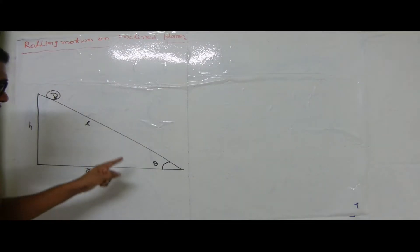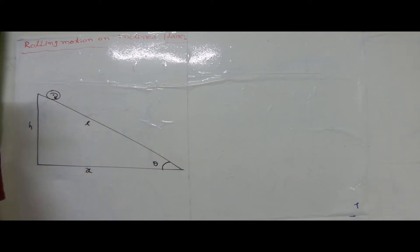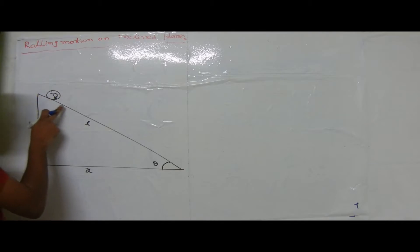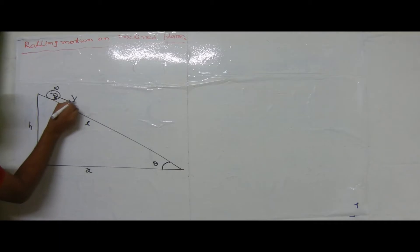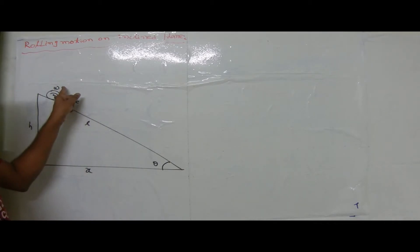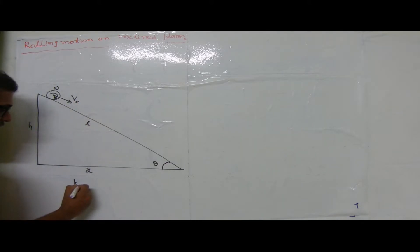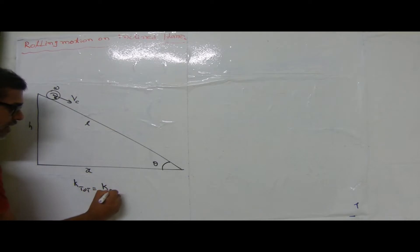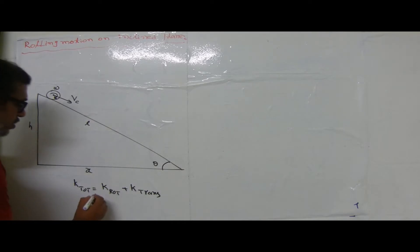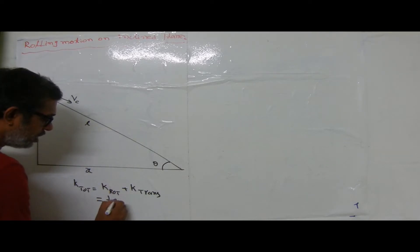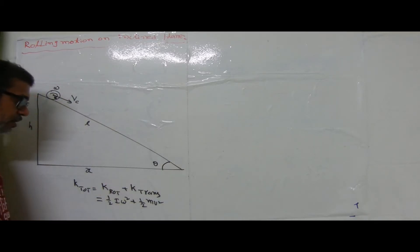There is an inclined plane having inclination of theta degrees such that an object is allowed to roll over the inclined surface. The object has omega (angular speed) and vc (center of mass linear speed) — two speeds. As a result, the system contains total kinetic energy, which equals kinetic energy due to rotation plus kinetic energy due to translation. Rotational KE is half I omega squared, and translational KE is half mv squared.